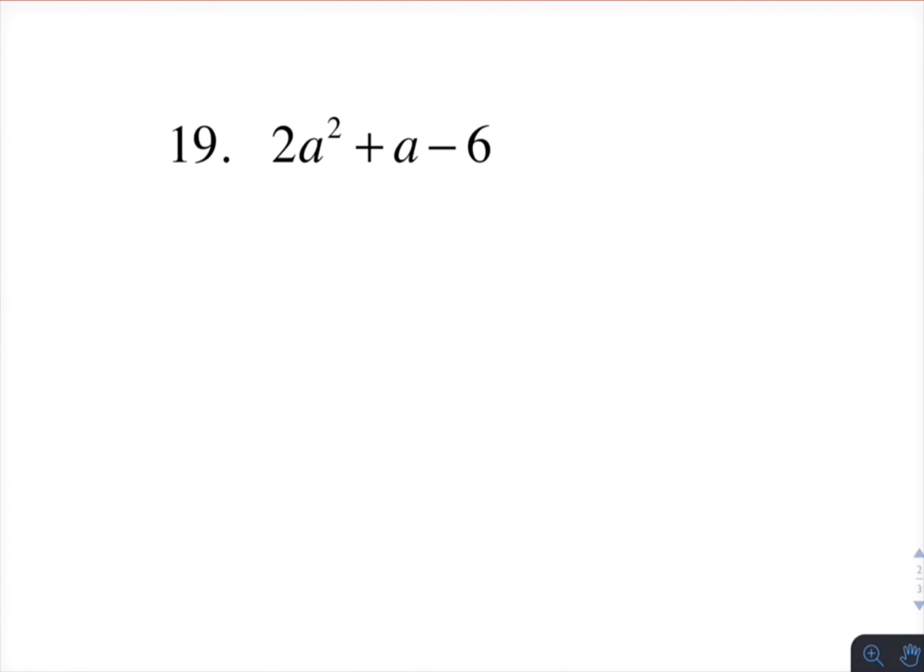Notice here the leading coefficient is not a 1. But that's okay. So that just means instead of having a and a, I need a 2a and an a. I'm still looking for factors of 6, understanding that one of them is going to be multiplied by this 2 here. So if I use 3 and 2, I want to make sure that the 2 is multiplied by that 2 and that the 3 goes here. And now I want to make sure that I get the right sign in the middle. So if we can test this, we know we're going to get 2a squared and we know we're going to get negative 6. It's the positive a in the middle that we're concerned about. So multiplying those 2, I get a negative 3a. And multiplying these 2, I get a positive 4a. And adding those together, I get the positive a that I need. So this is the solution.